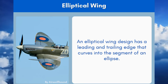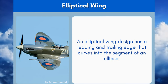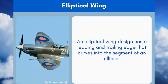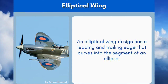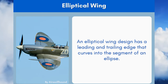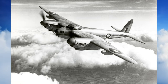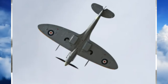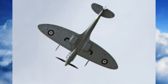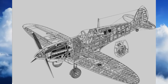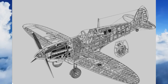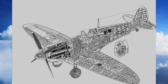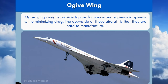5. Elliptical Wing Design. An elliptical wing design has a leading and trailing edge that curves into the segment of an ellipse. A constant elliptical wing can stall all at once due to the even lift distribution. Designers use an aerofoil with varied stall characteristics to give pilots more warning.